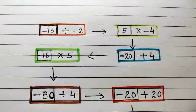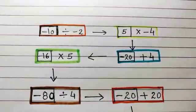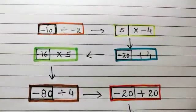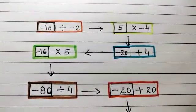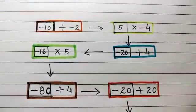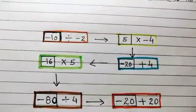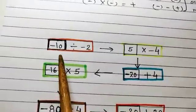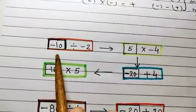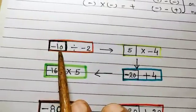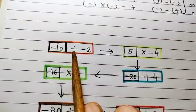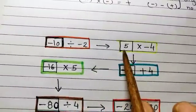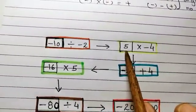Hello everyone. Now we will start with the activity based on the topic integers, whose aim is to understand the operations on integers. Whenever two integers are divided, that is, negative 10 divided by negative 2, you will be getting positive 5.